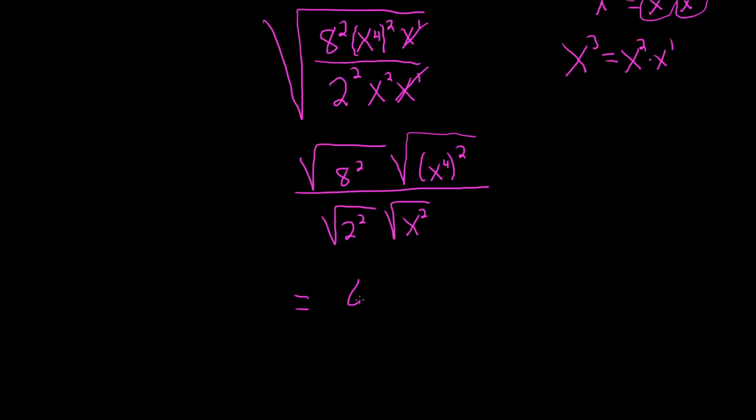So this is equal to 8, because the square root cancels the 2. It does that in every case. And then x to the 4th, over 2x.